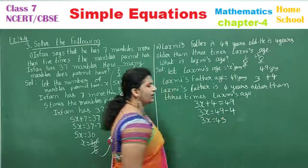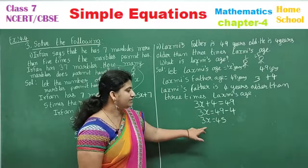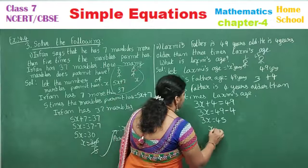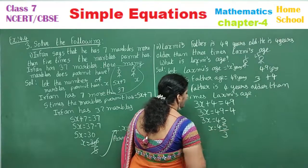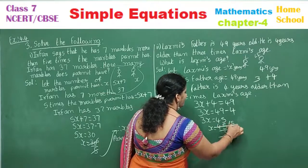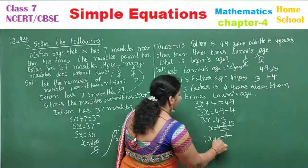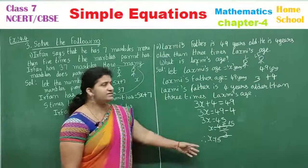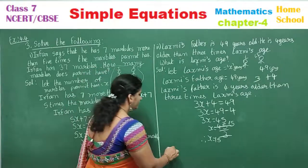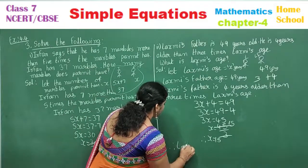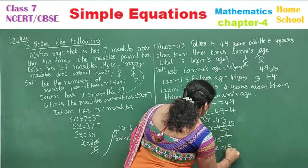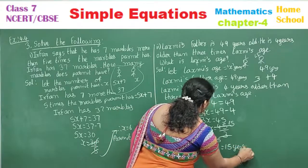3X = 45. Divide both sides by 3: X = 45 ÷ 3 = 15. Therefore, Lakshmi's age is equal to 15 years.